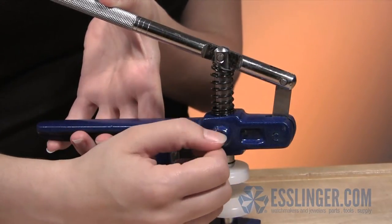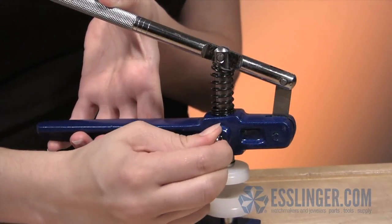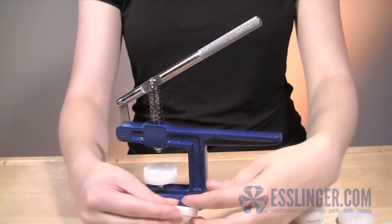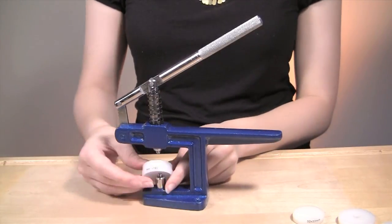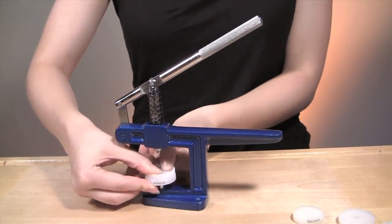It also has a plunger lock feature, so you can maintain pressure while your hands are free to work on other repairs. It comes with 12 reversible dies, both tapered and flat, that will fit all sized watch cases and watch crystals.